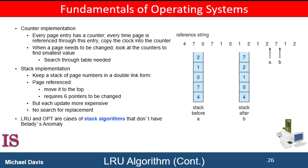We can use counters. In the simplest case, we associate with each page table entry a time-of-use field and add to the CPU a logical clock or counter. The clock is incremented for every memory reference. Whenever a reference to a page is made, the contents of the clock register are copied to the time-of-use field in the page table entry for that page. We always have the time of the last reference to a page and replace the page with the smallest time value. This scheme requires a search of the page table to find the least recently used page and a write to memory for each memory access. The times must also be maintained when page tables are changed due to CPU scheduling, and overflow of the clock must be considered as well.